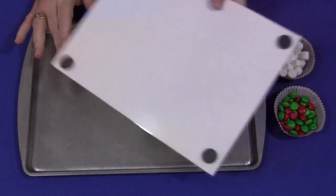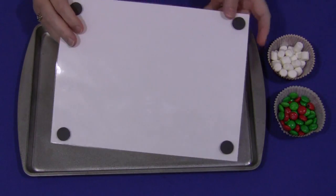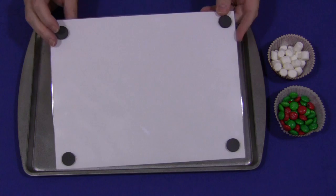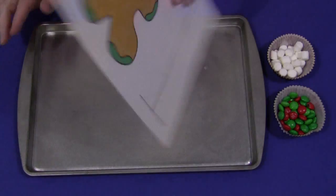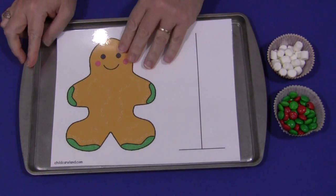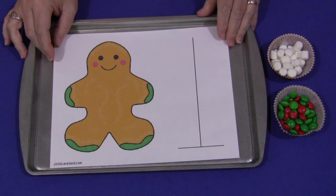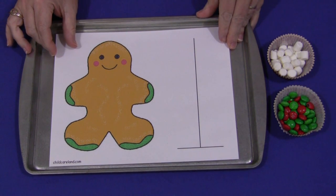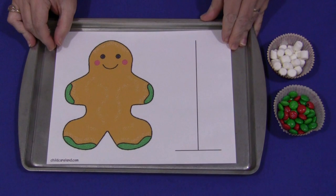You don't have to, but I always like to secure things when we do these kinds of activities. So I use self-adhesive magnets on the back and then just put it on a metal cookie sheet. That way when the children are putting on the items that they're going to use to measure the gingerbread man, it's not going to slide all over.